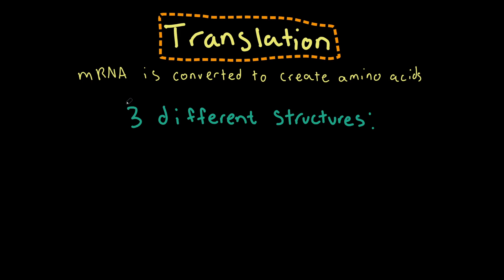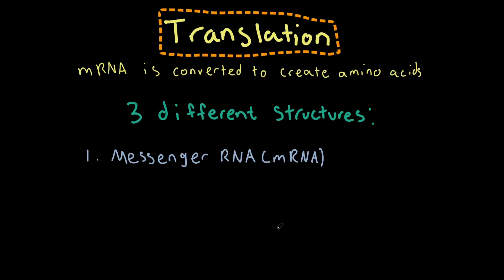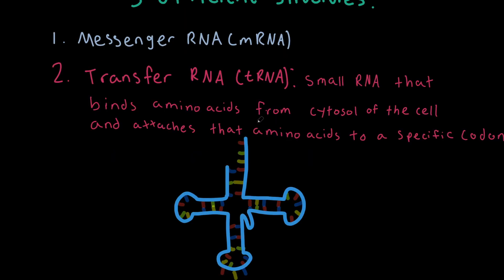Now let's talk about translation. This is when our messenger RNA is converted to create an amino acid, which creates our protein. You could think of translation as translating that mRNA into a protein. There are three different structures that constitute the process of translation. The first is our messenger RNA, which will be converted to create a specific protein. The second is known as transfer RNA, or tRNA, which is a small RNA that binds amino acids from the cytosol and helps code for the specific RNA.